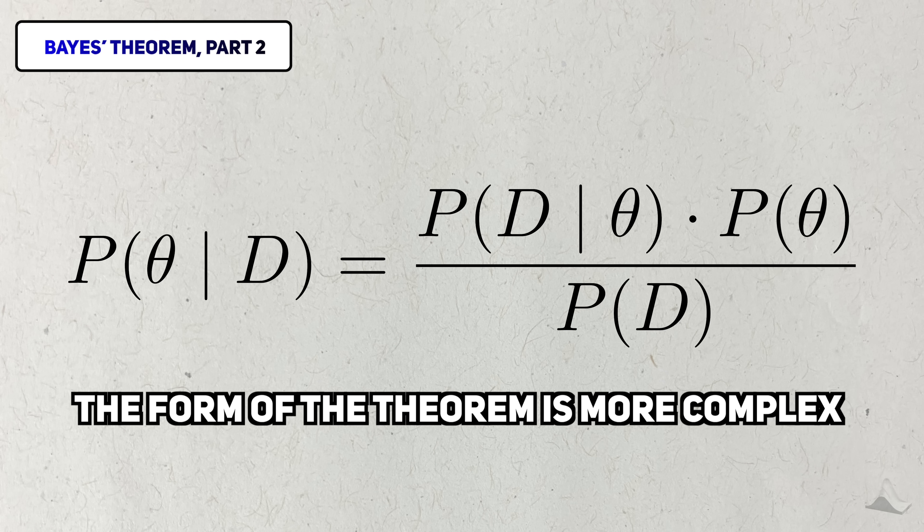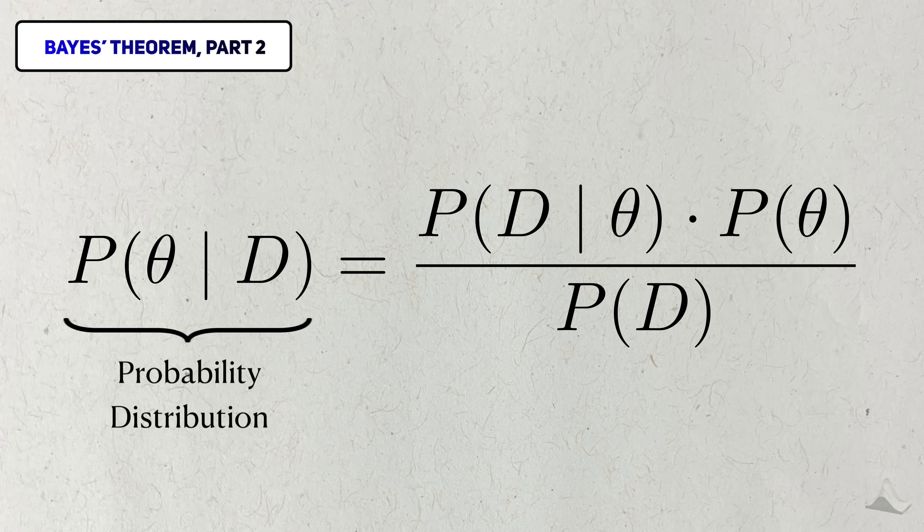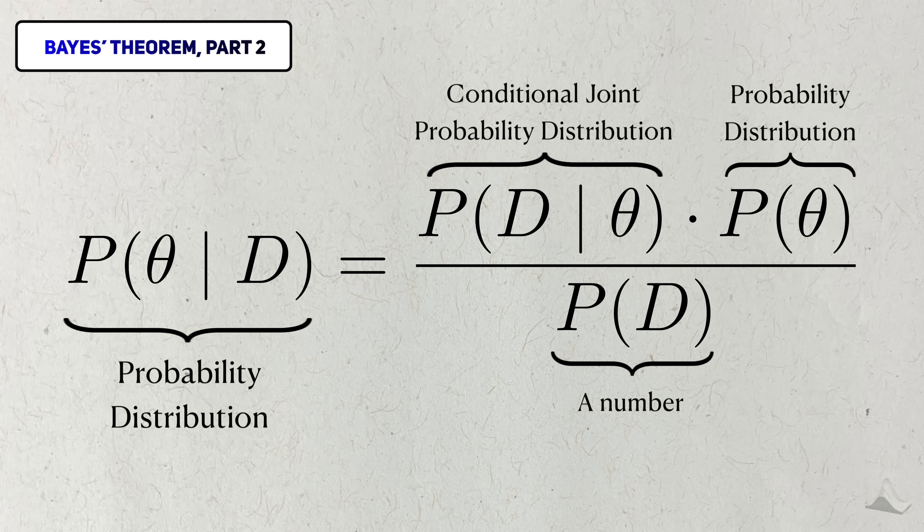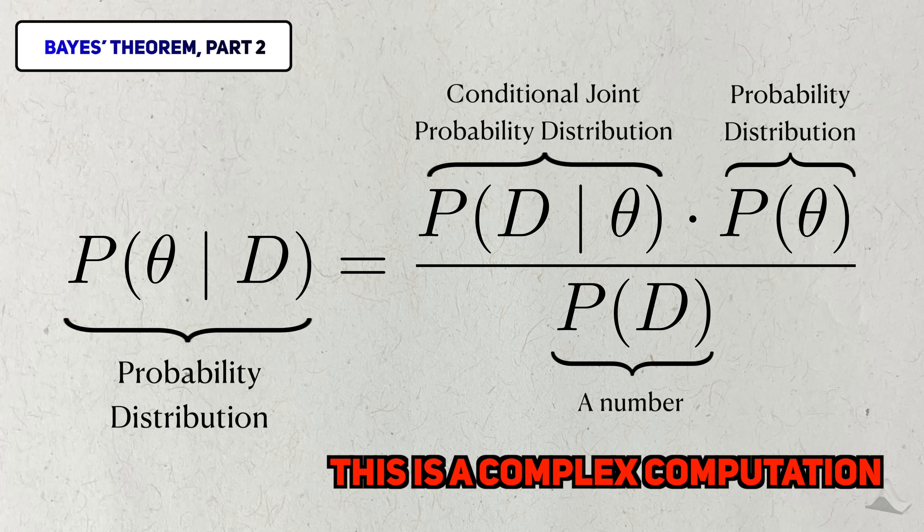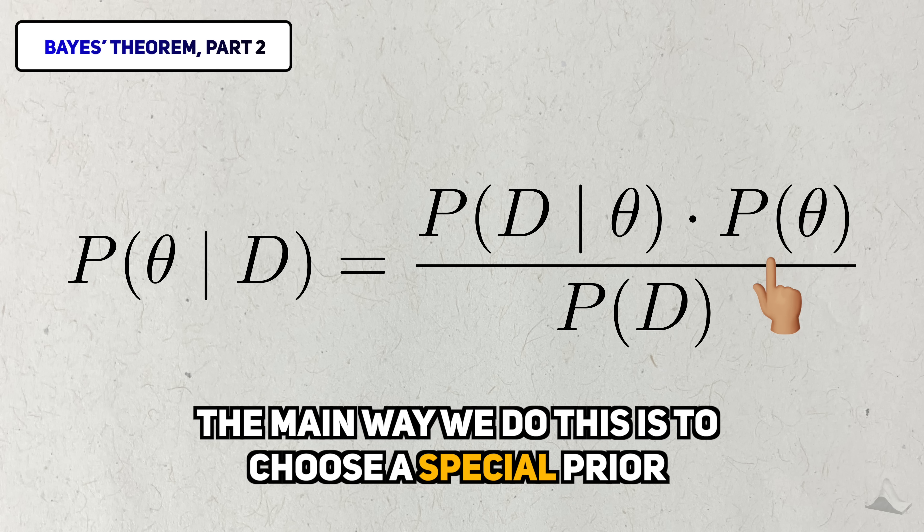Taking a step back, we can see that this new version of Bayes' theorem is more complex. Bayes' theorem tells us that you can get a new probability distribution by multiplying these two functions together and dividing by this complicated integral. This calculation is so complicated that we usually try to simplify it. The main way we do this is to choose a special prior.